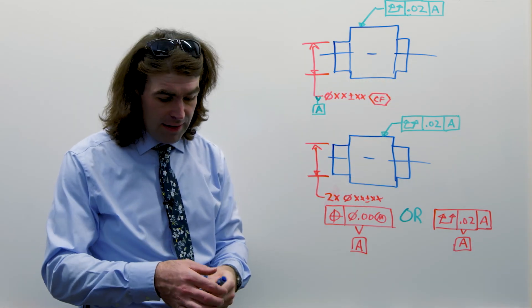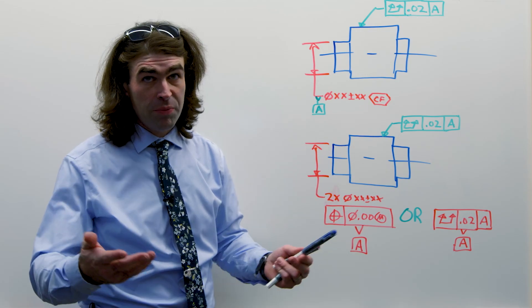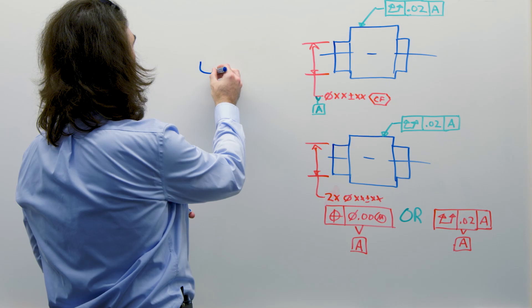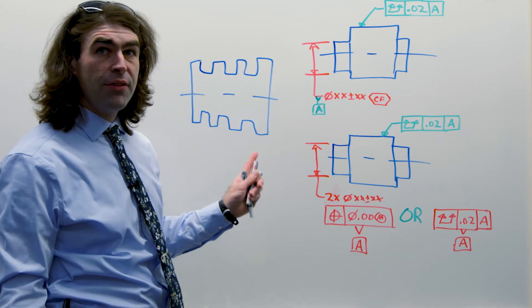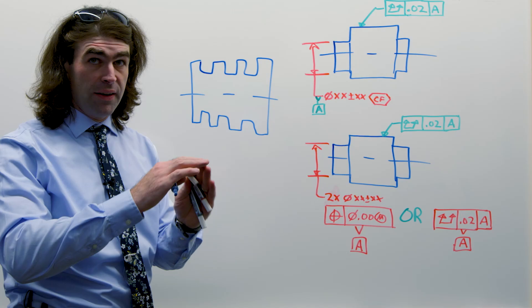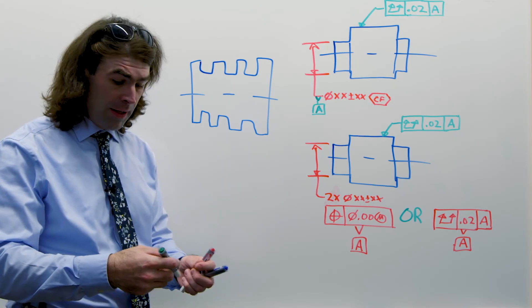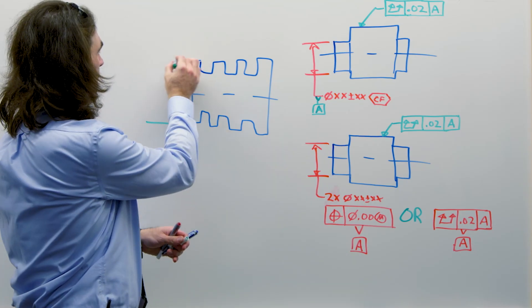I think, and I don't have any proof of this, but given the examples, the idea with continuous feature is that if you have something like this where you've got a cylinder with grooves cut into it, it does make a lot of sense to just say that outside diameter is a continuous feature.